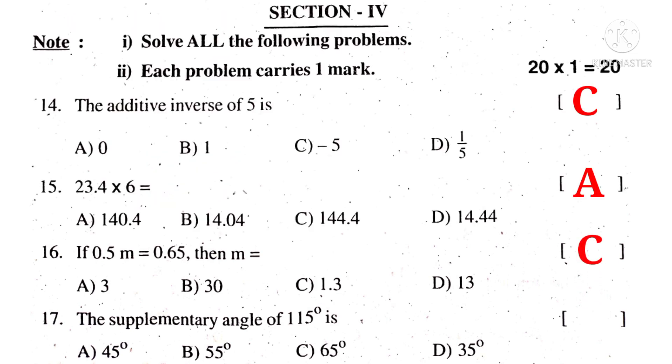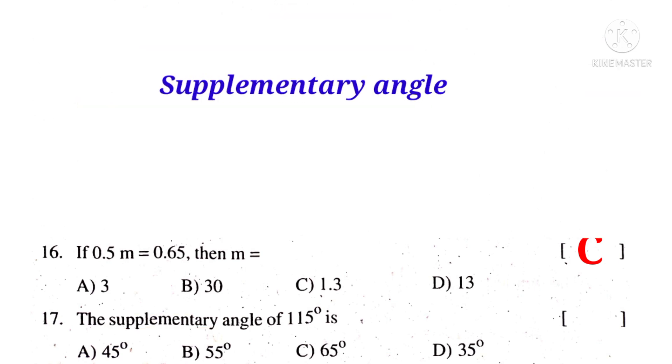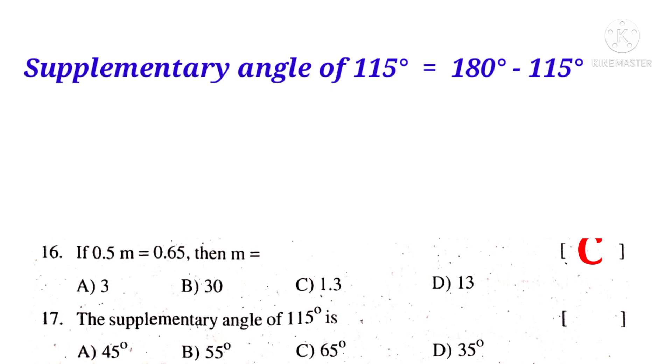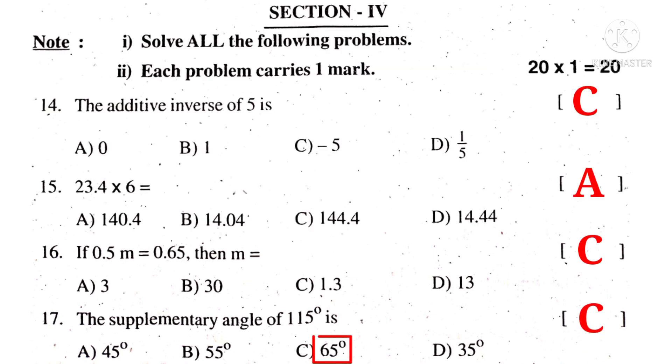Now 17th. The supplementary angle of 115 is, observe the word supplementary, means sum of angles is 180 degrees. So to get the another angle, we have to subtract from 180 degrees. So supplementary angle of 115 degrees is 180 minus 115 degrees, that is equal to 65 degrees. So the correct choice is C.